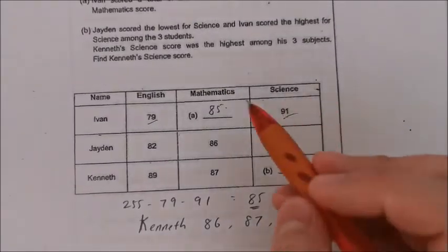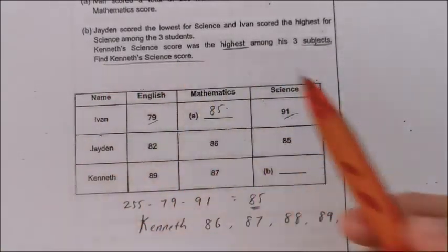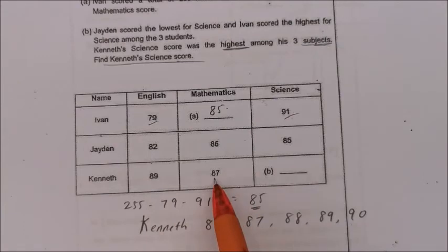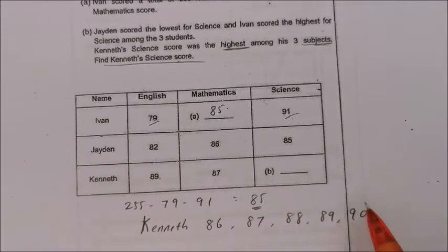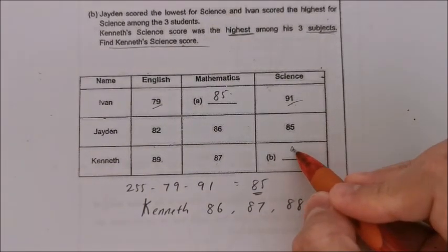Kenneth's science score was the highest among his three subjects. Okay, so his score has to be higher than the mathematics, which is 87, has to be higher than 89. So the only answer has to be 90.